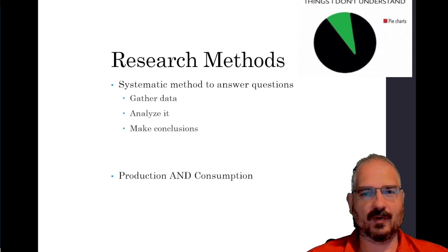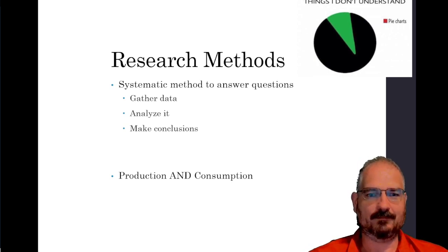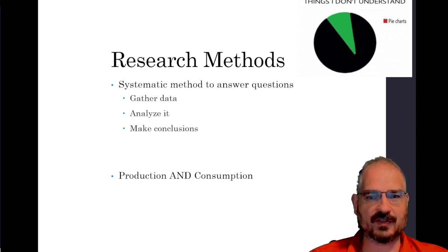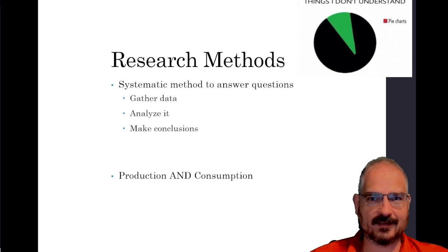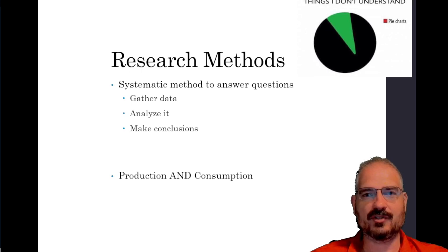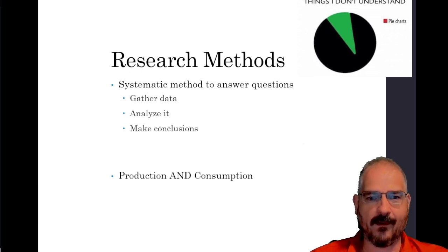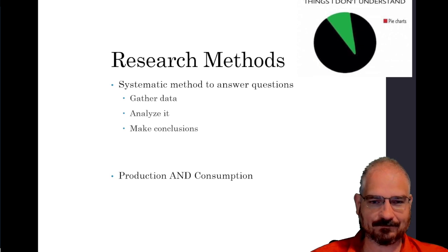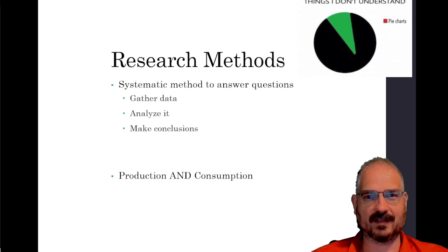Hello everybody and welcome back to our research methods section. We're talking in this section about science and logic and why we do research methods. Research methods is just a systematic method to answer questions. We have all these questions, all these cognitive biases, all these logical fallacies, and research methods provides us a way to minimize those and answer questions that have the highest chance of getting us the true, correct, reality-based answer.